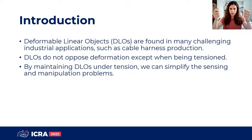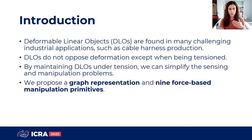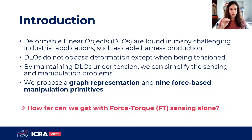And if we then push that cable and have some sort of obstacle, we can feel the change in tension and estimate the new shape. Based on this simple observation, we propose a graph representation of the object, which is then used to define nine force-based manipulation primitives. The goal of this project is to see how far we can get with force-torque sensing alone, though in any real application, vision will still play a big role, especially for handling errors.